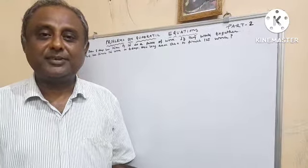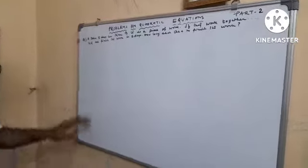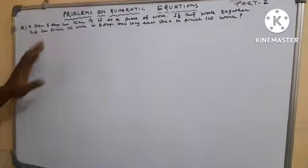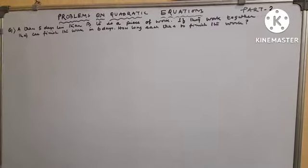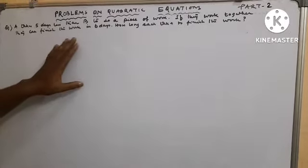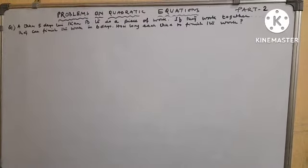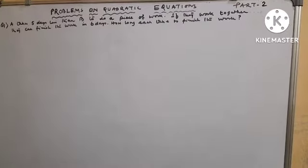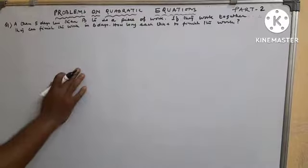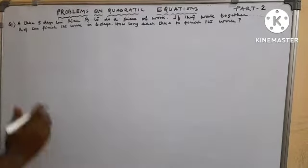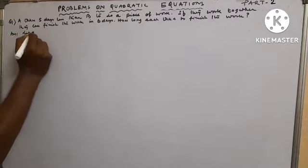Welcome to KT's Commerce Classes. We have some problems on quadratic equations, part two. Question number one: A takes five days less than B to do a piece of work. If they work together, they can finish the work in six days. How long does each take to finish the work?